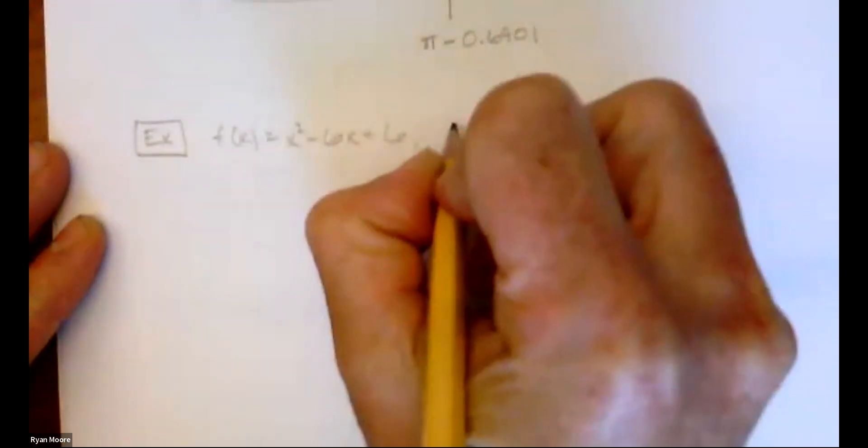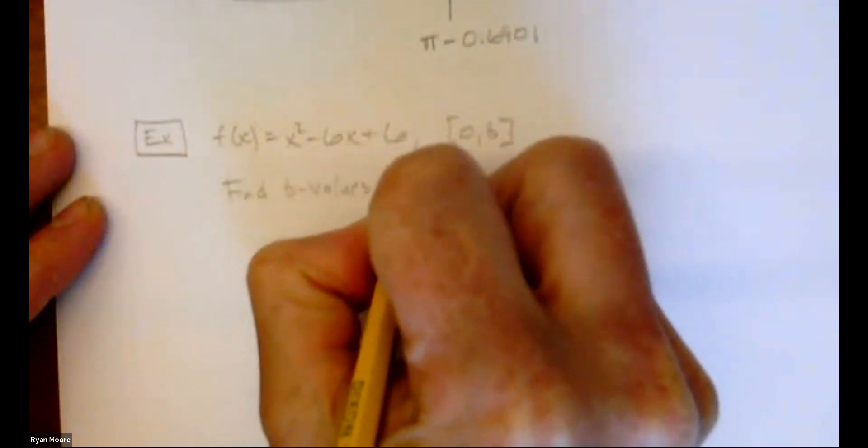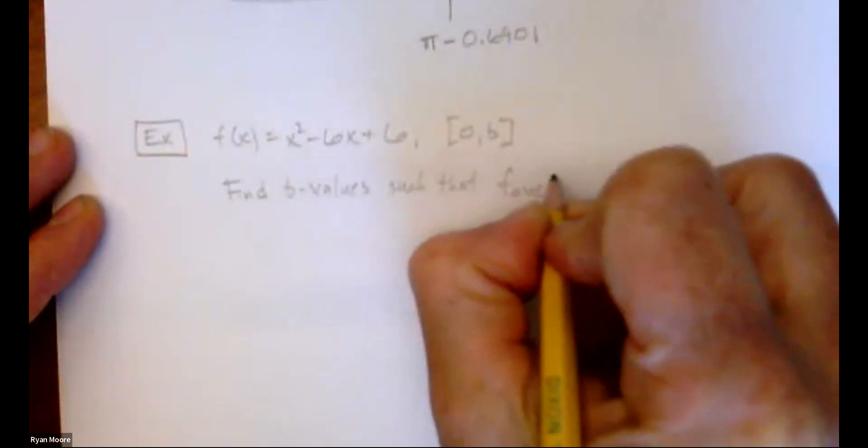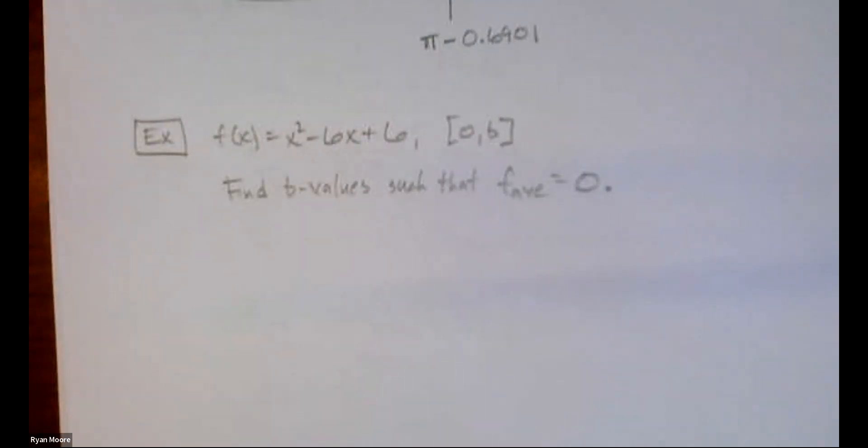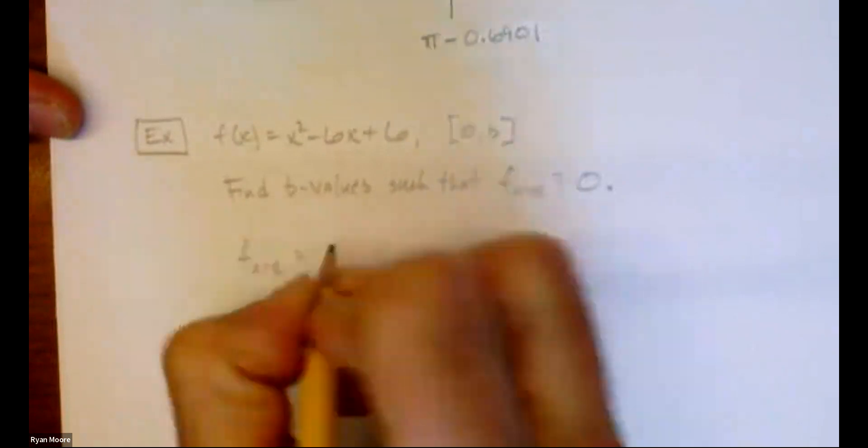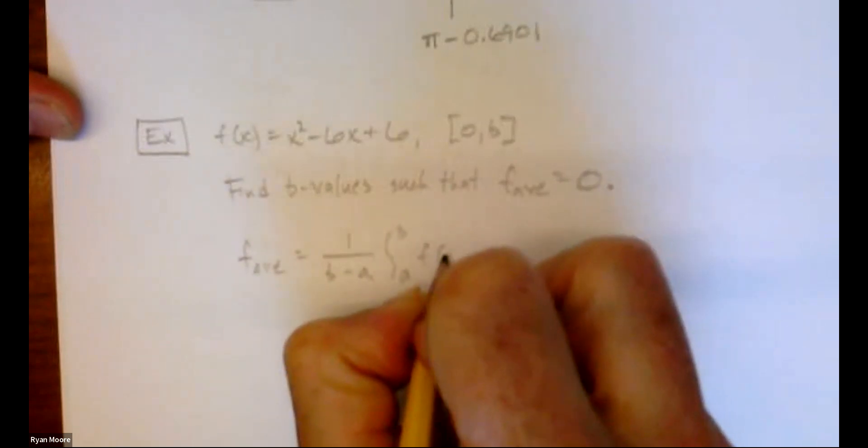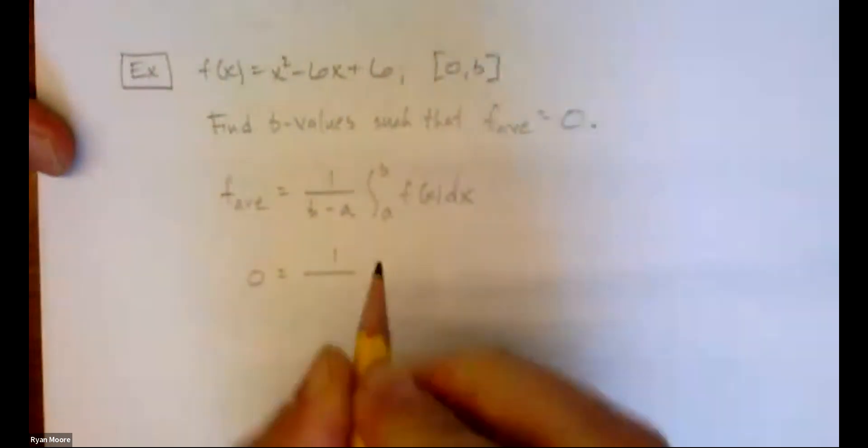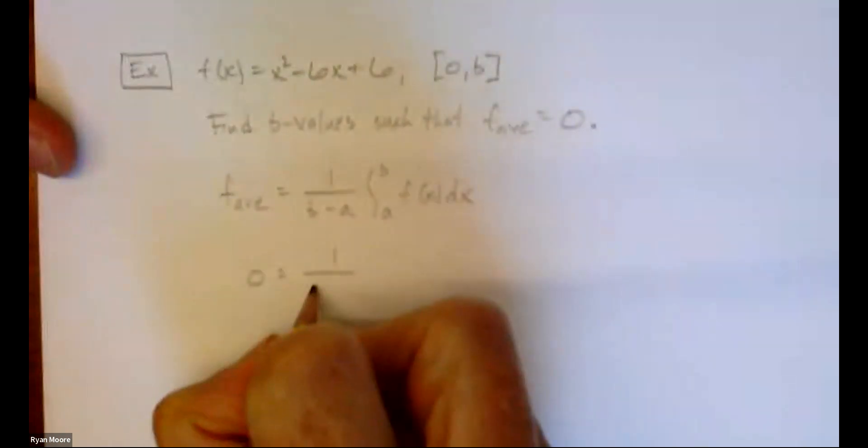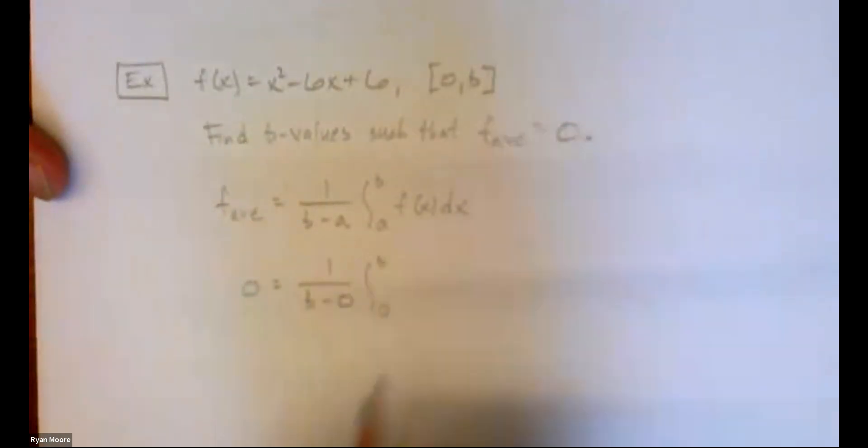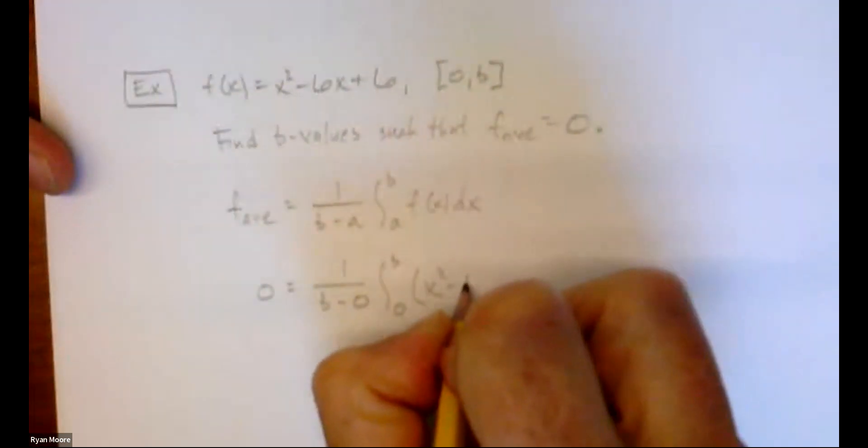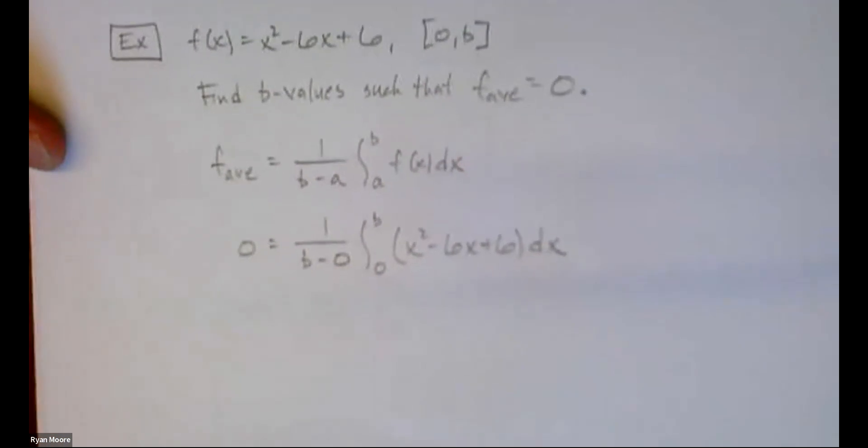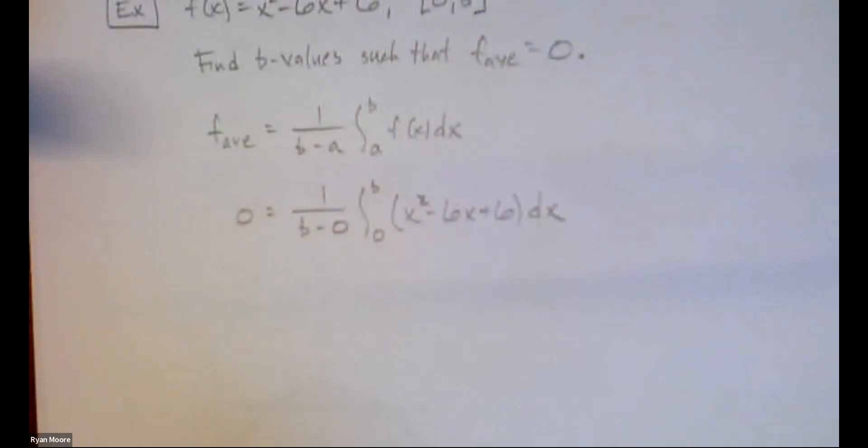Let's see how this works out. So we got f of x equals x squared minus 6x plus 6 on 0 to b. Find all of the b values such that f average equals 0. So, okay, I'm just going to repeat the formula. Again, f average equals 1 over b minus a integral from a to b, f of x dx. And we'll plug in what we can so we know the average is supposed to be 0. The a value is also 0, but we don't know b. So we're going to put in 1 over b minus 0 integral from 0 to b. And we've got our function x squared minus 6x plus 6. We got to figure out what b is going to equal.